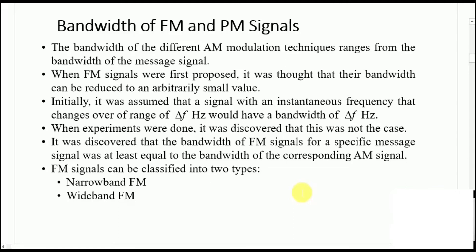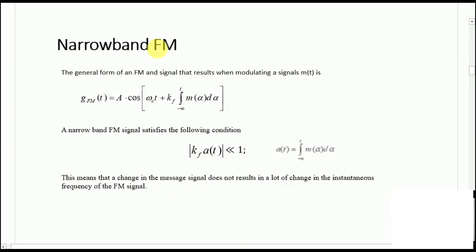We will focus on two aspects of FM: narrowband FM and wideband FM. For narrowband FM, the condition is that the sensitivity constant Kf multiplied by A(t) must be much much smaller than 1. If this condition holds, the modulation scheme is narrowband FM; if not, it is wideband FM.